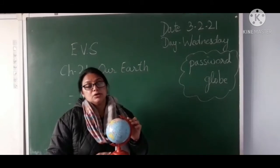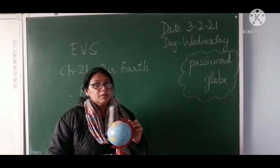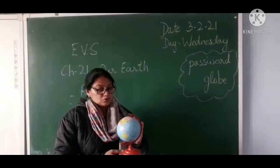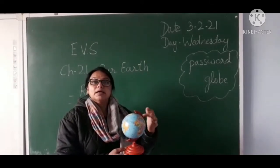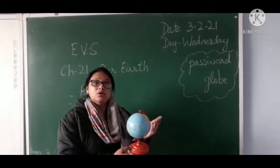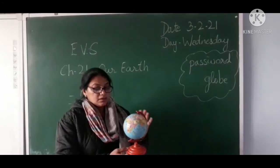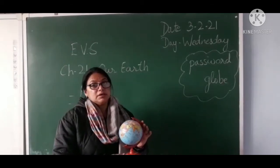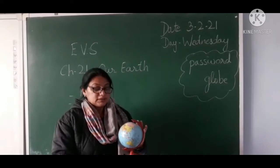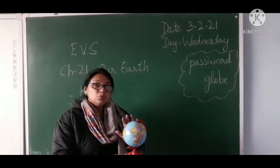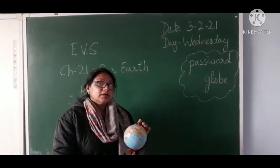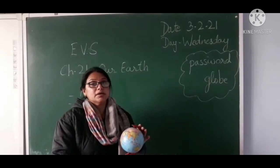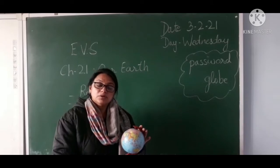We already know that a map can be drawn on a piece of paper. But we can also see the map on a globe. We can move around the globe and easily see and locate places on it. It is appearing blue, because as we know our Earth has 71% water and only 29% land surface. Using the globe, we can easily locate our country, continents, and important places.